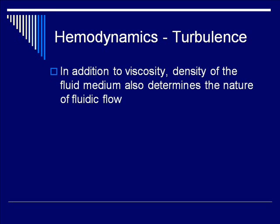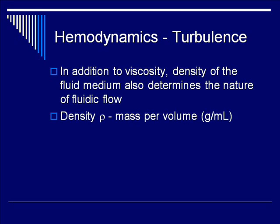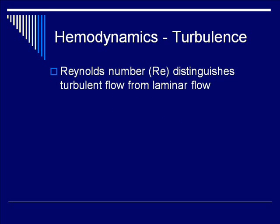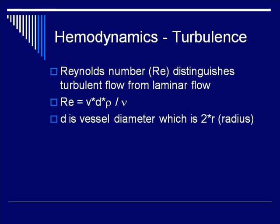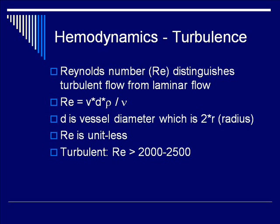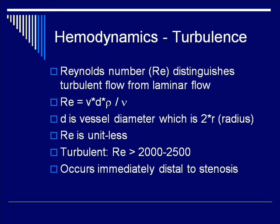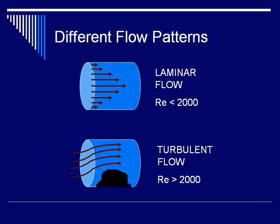Let's talk about turbulent flow. In addition to viscosity, density needs to be considered to determine turbulence. Density is defined as mass per volume in grams per milliliter. The Reynolds number, Re, is used to distinguish turbulent from laminar flow. Re equals velocity times diameter times density divided by viscosity, where diameter is two times the radius. It is important to know that the Reynolds number is dimensionless. If it is greater than 2,000 to 2,500, you are in the turbulent range, and this usually occurs immediately distal to the stenosis.